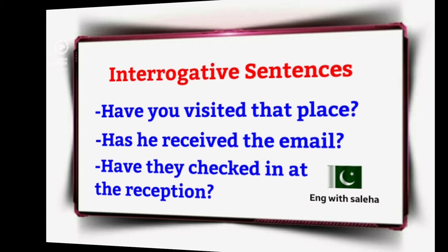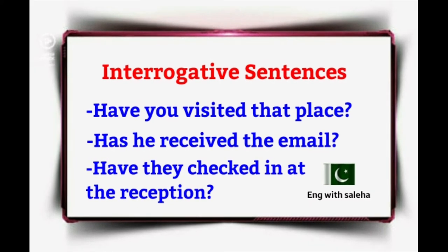In Present Perfect interrogative sentences, we bring Has/Have to the start of the sentence — before the subject (boss) instead of after it. For example: 'Have you visited that place?' — کیا تم اس جگہ جا چکے ہو؟ The simple form would be: You have visited that place. As a question: Have you visited that place? Similarly: 'Has he received the email?' and 'Have they checked in at the reception?' — the simple form being: They have checked in at the reception.